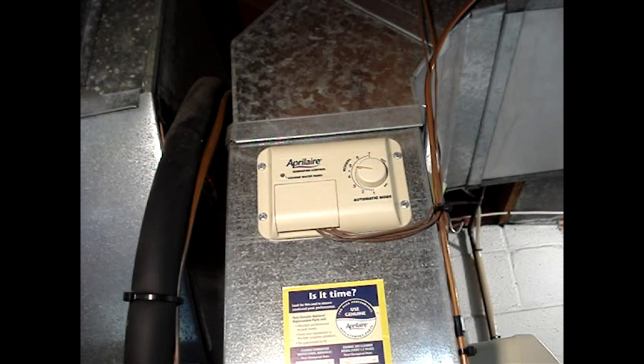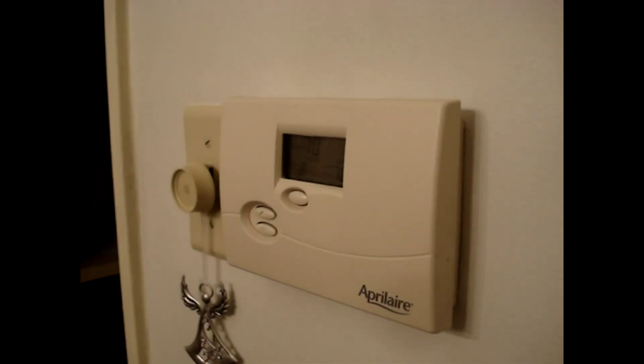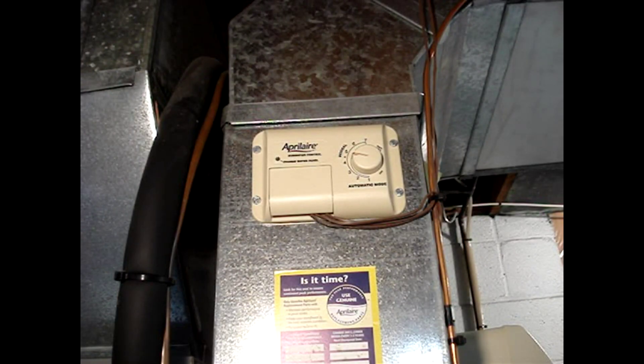The humidistat may be mounted nearby the humidifier on the ductwork. It could be combined with your thermostat or perhaps it could be a separate control beside the thermostat. This has an outdoor temperature sensor and it automatically adjusts the humidity to the correct level.